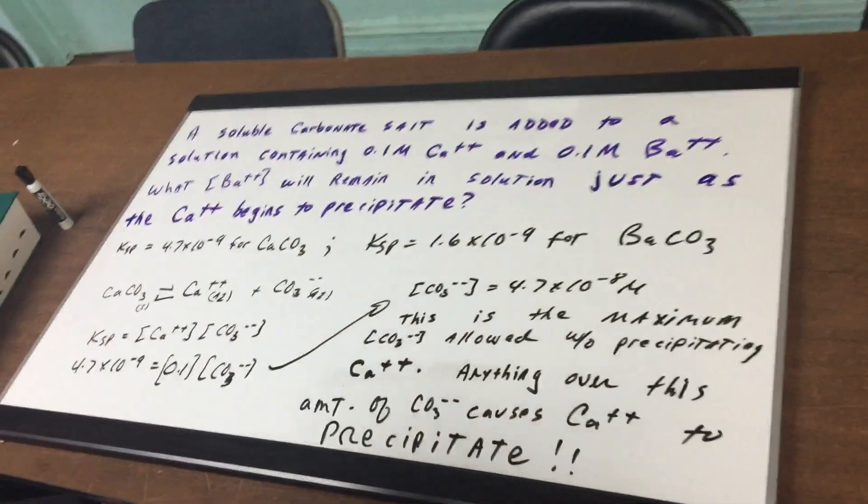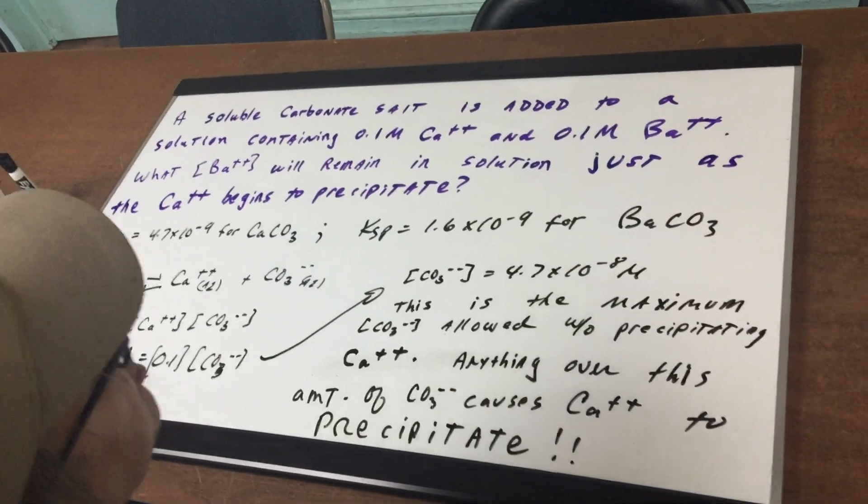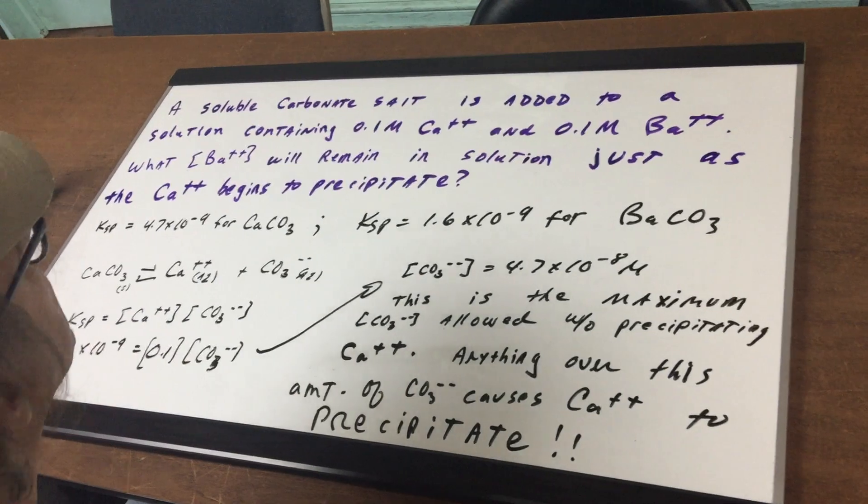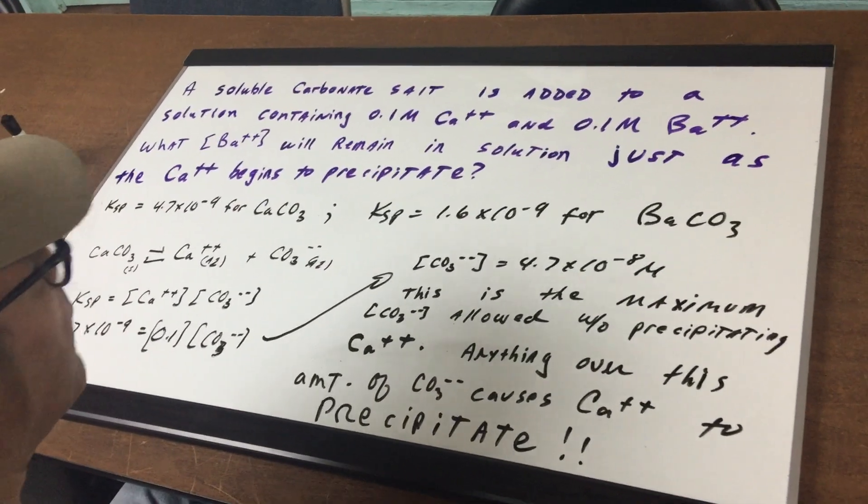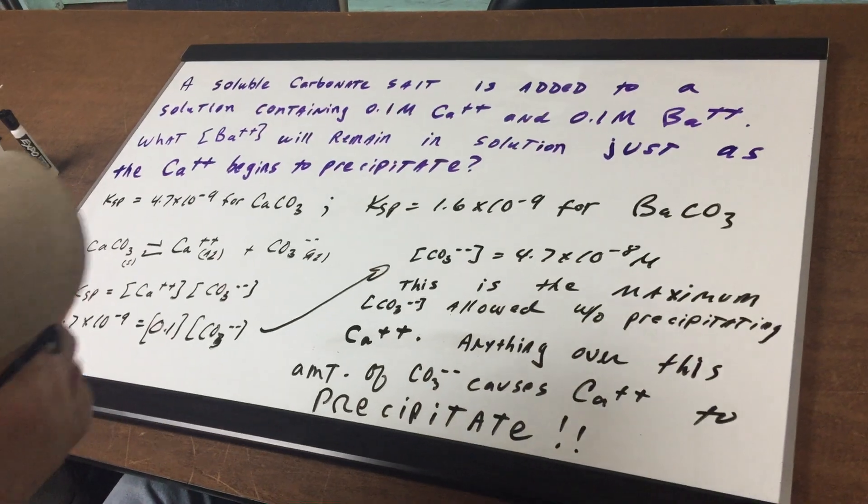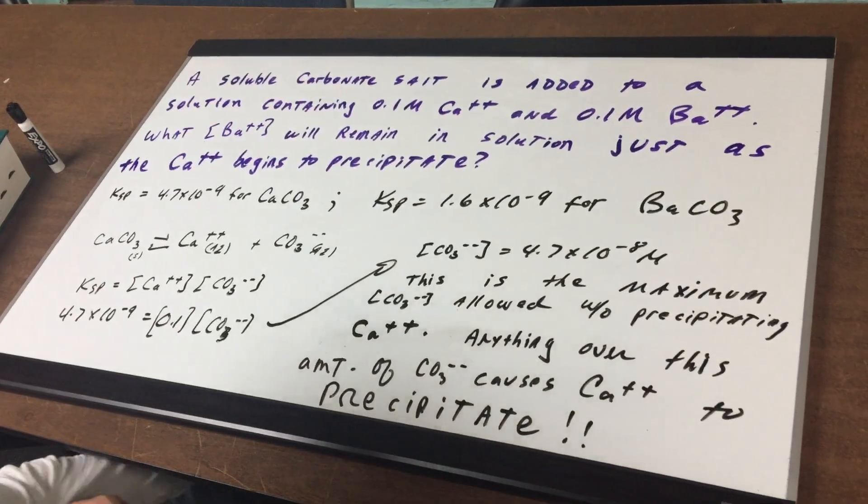I say to you we have a soluble carbonate salt and it's added to a solution containing 0.1 molar of calcium ions and 0.1 molar of barium ions.